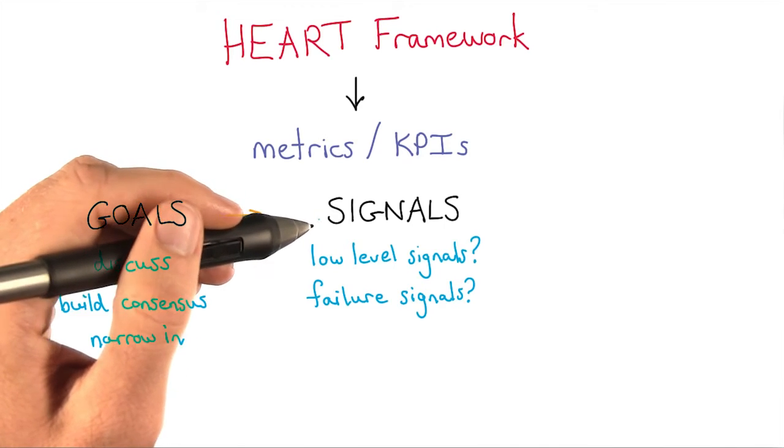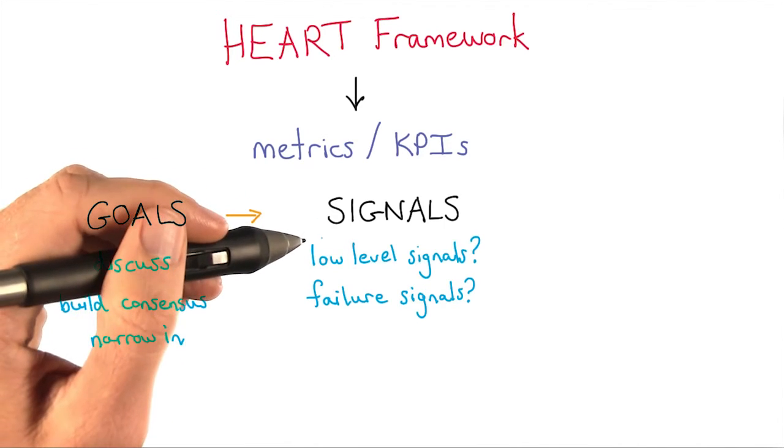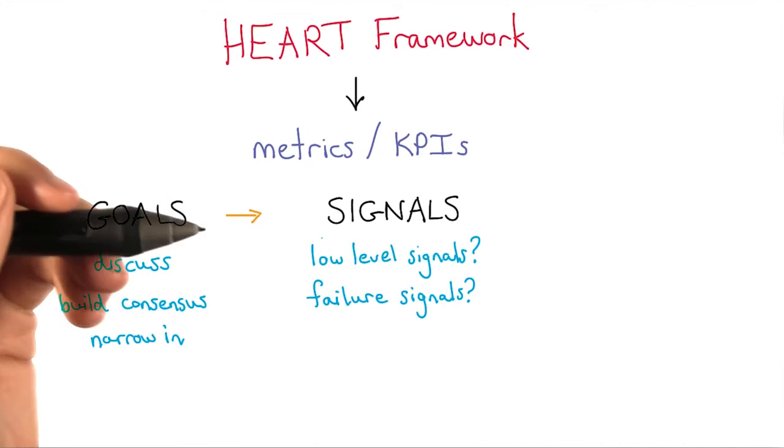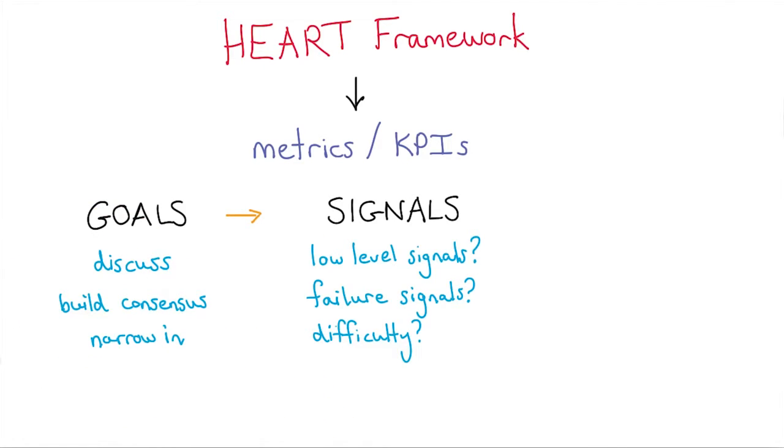Once you have a couple signals down, you should ask some additional questions to determine which signals might be best. First, you should ask how easy or difficult is it to track the signal? You might be able to come up with a better proxy or a different signal to track that same thing. It may be that the website or app is not instrumented to log relevant events and actions, so you might need to do some additional research at this point. Another question you should ask is, is the signal sensitive to changes in the design of the website or the app?